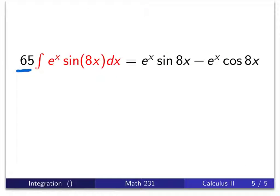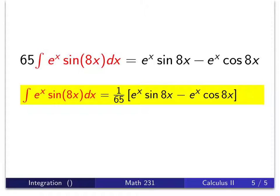So we have 65 times our desired integral is equal to e^x sin(8x) - e^x cos(8x). Well if 65 times my integral is equal to all this, how could I find out what my integral is equal to? Divide both sides by 65. And so our integral that we started off with is 1/65 [e^x sin(8x) - e^x cos(8x)].